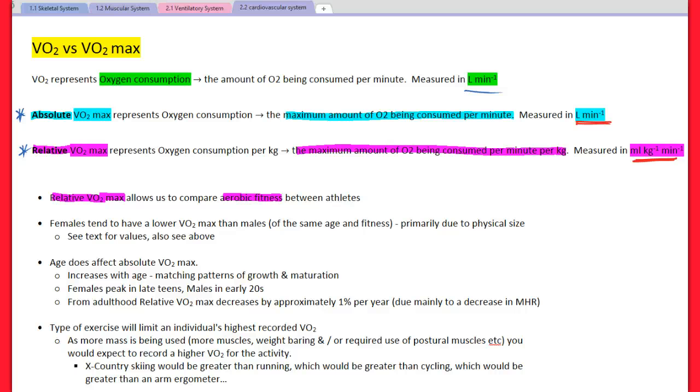Some other general rules. Females tend to have a lower VO2 max than males. This is at the same age and fitness level, primarily due to physical size. Age does affect absolute VO2 max. It increases with age, matching patterns of growth and maturation. As you get older, up until you reach physical maturity, it will increase, might plateau very slightly, and then will decrease at the rate of about 1% per year.